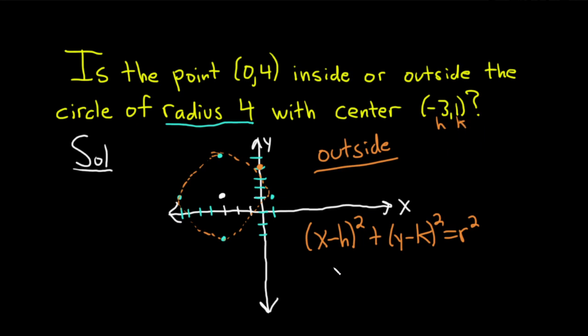So let's plug everything in. This is our h and k. So we would get (x + 3)², because it's x minus a negative, so double negative becomes a positive, plus (y - 1)² equals r², which is 16.